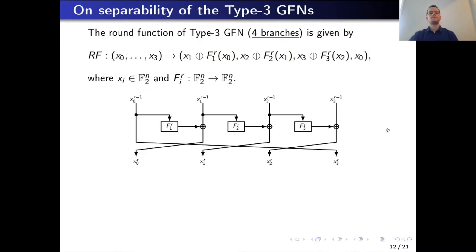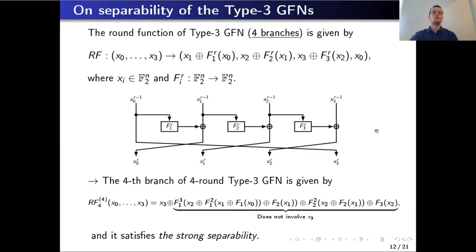Switching to type 3 generalized Feistel networks and focusing on four branches for simplicity, we have the round function as shown. One can notice that the fourth branch satisfies strong separability. This is because block x3 is not involved in the rest of the expression, so we can label x3 as variable x, take all blocks x0, x1, and x2 as suitable constants, and easily construct a periodic Simon's function.